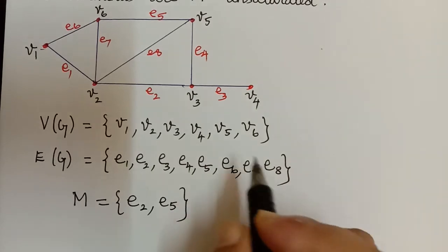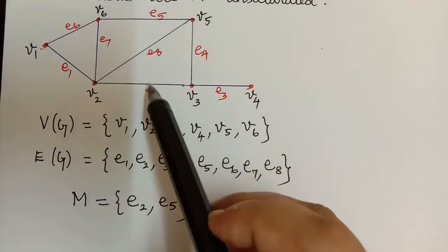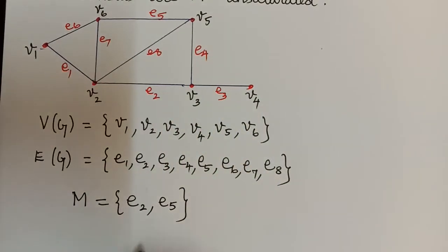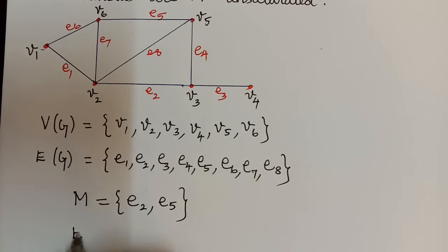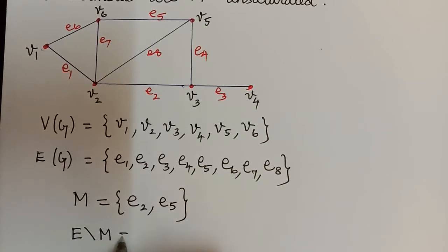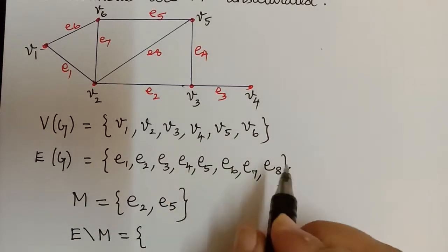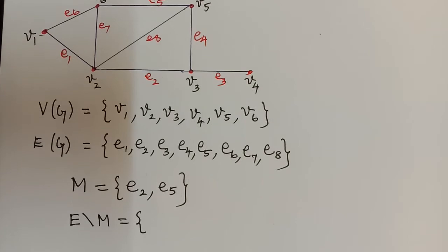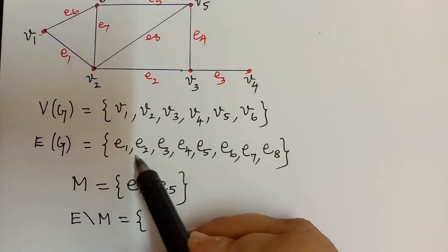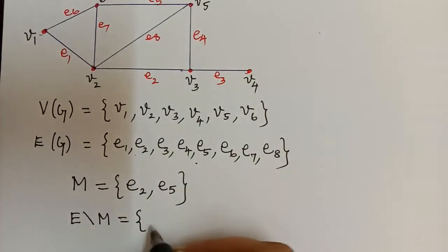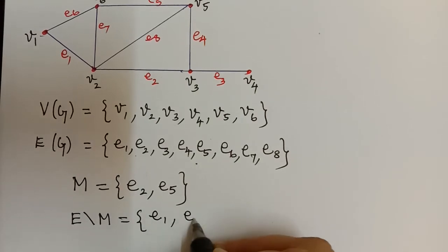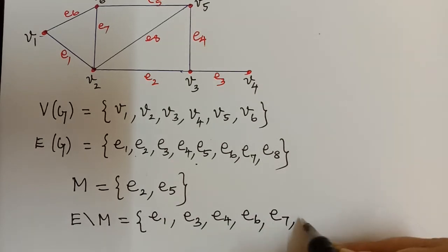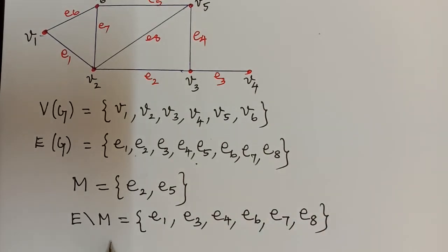We can see that edges E2 and E5 are non-adjacent to one another, and therefore this is a matching. Next, we have to write the set E restricted to M. From the edge set, we remove the edges of M and write the remaining edges. So if we remove E2 and E5, the remaining edges are E1, E3, E4, E6, E7, and E8. This is E restricted to M.